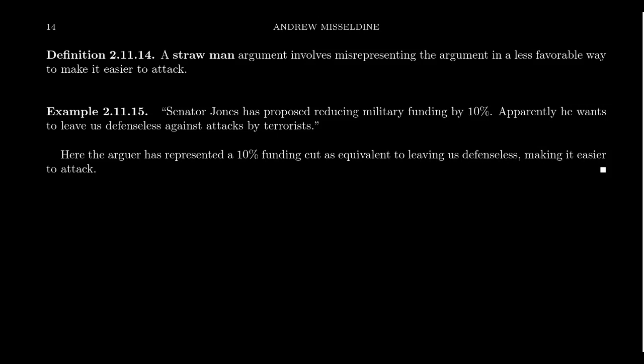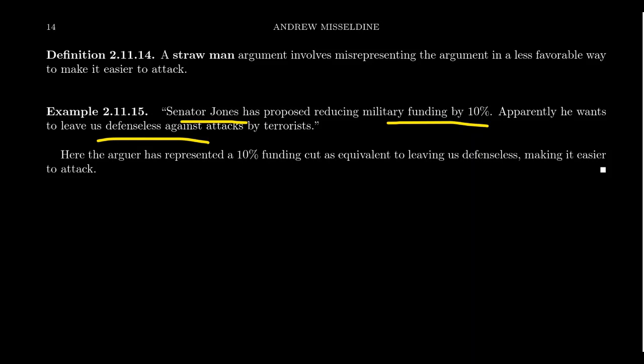The idea is: most people would agree we don't want to be defenseless against terrorists. We understand the events of September 11th, 2001 — a horrific day where thousands died. Clearly, no one in the United States wants that to happen again, so we need to defend ourselves. But is Senator Jones actually arguing we should be defenseless? Senator Jones is arguing that military funding should be reduced by 10%. There could be many reasons for this — maybe he's trying to be fiscally responsible and stay within a budget. There are many reasons why he could propose a decrease in funding.